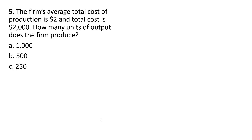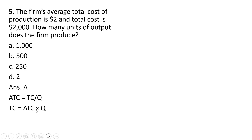Question five. The firm's average total cost of production is $2 and total cost is $2,000. How many units of output does the firm produce? The answer is 1,000. We start with average total cost equals total cost divided by Q, then rearrange: multiply through by Q and divide through by average total cost. The quantity of output equals total cost divided by average total cost, giving us 1,000 units. Answer choice A.